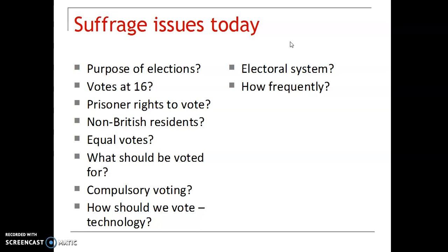What are the major issues of today? We still have major issues. One is: what is the purpose of elections? Should we focus it all on Westminster? Should we drop the voting age down to 16? Should some or all prisoners have the right to vote? What about non-British residents? Are some votes worth more than others? For example, Doncaster Central has consistently had a Labour MP, so if you are a Conservative voter there, the chances of success are pretty slim. When we vote, are we voting purely and simply for a representative, or can other issues be voted on as well?